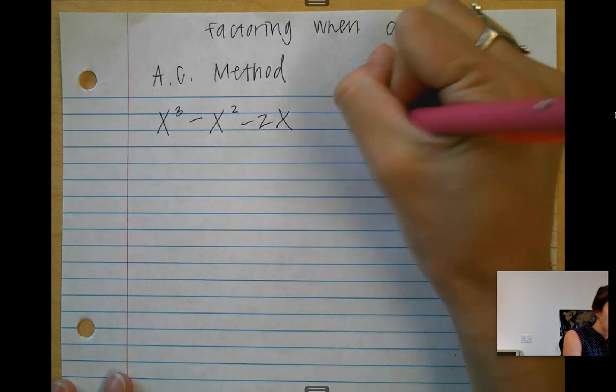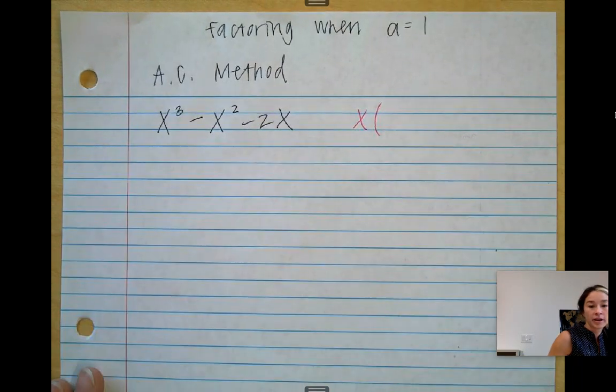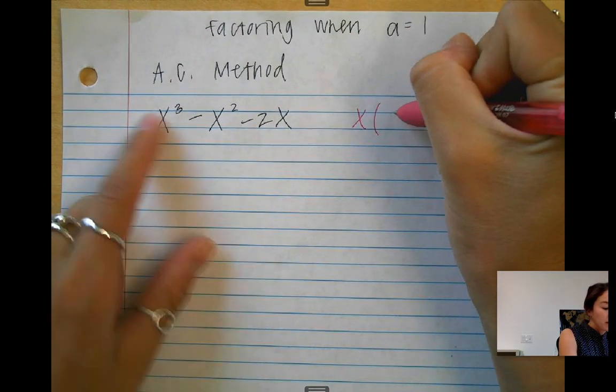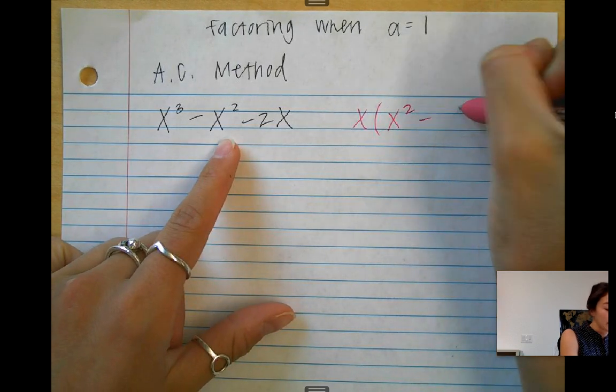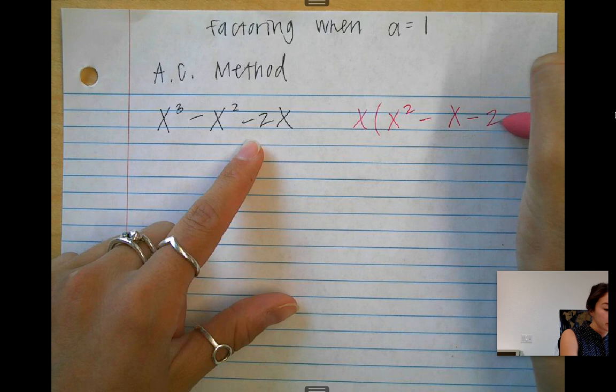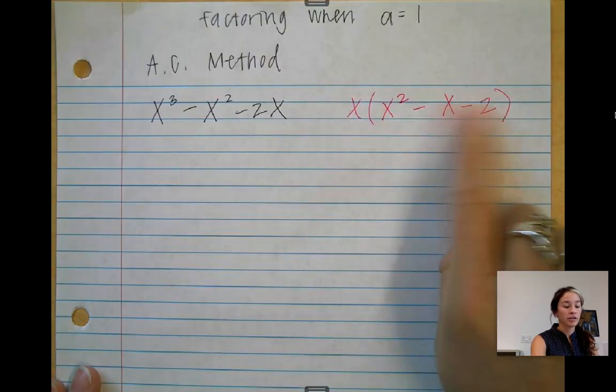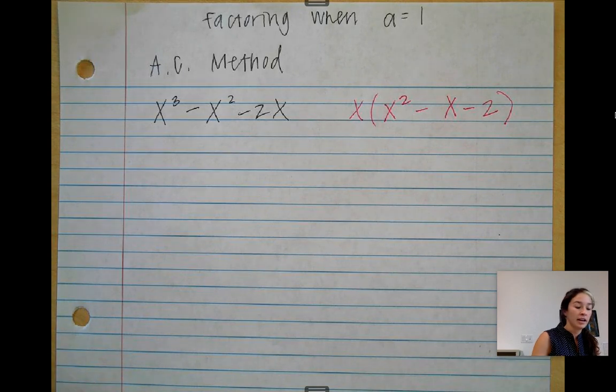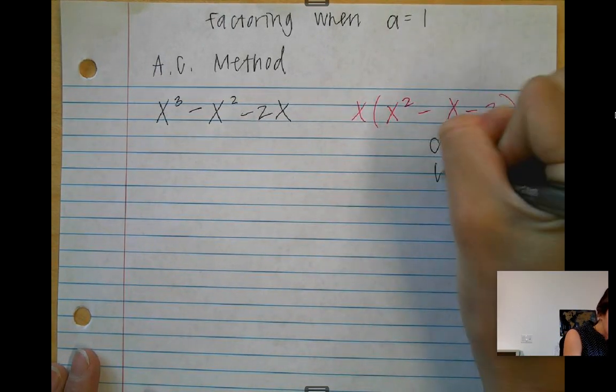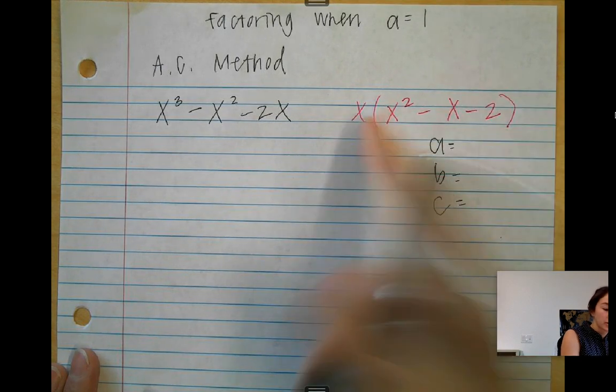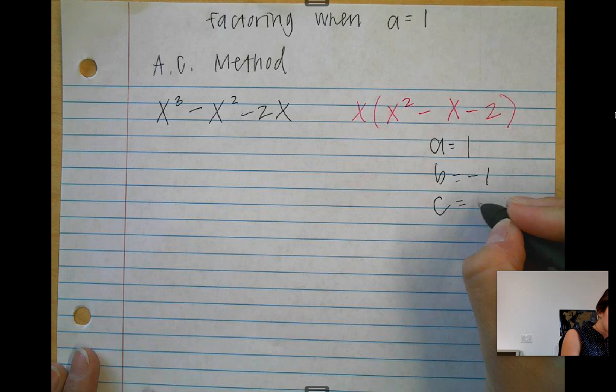So I'm going to pull out an x from my expression. I have x times x squared minus x minus 2. This is now going to be my new A, B, and C. So my new A is just going to be 1, B is negative 1, C is negative 2.